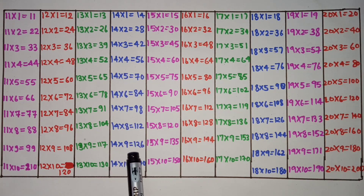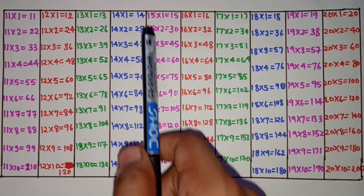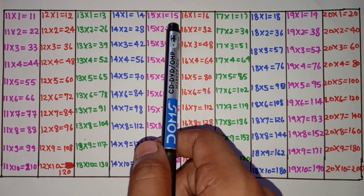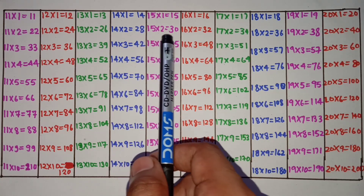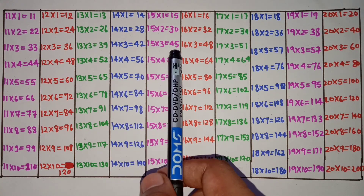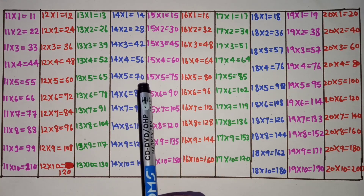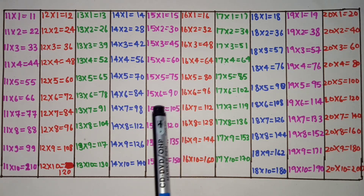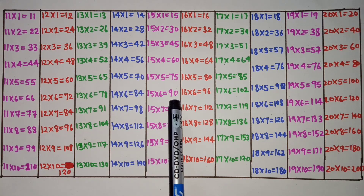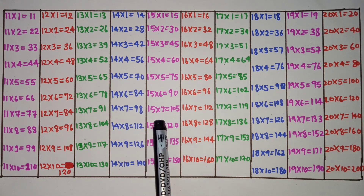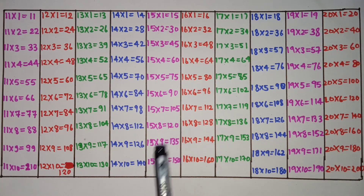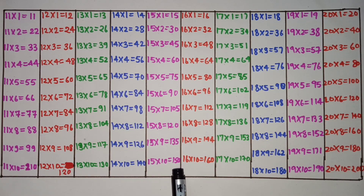14 nines are 126, 14 tens are 140. 15 ones are 15, 15 twos are 30, 15 threes are 45, 15 fours are 45, 15 fives are 75, 15 sixes are 90, 15 sevens are 105, 15 eights are 120, 15 nines are 135, 15 tens are 150.